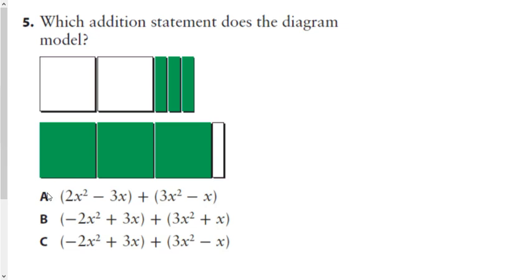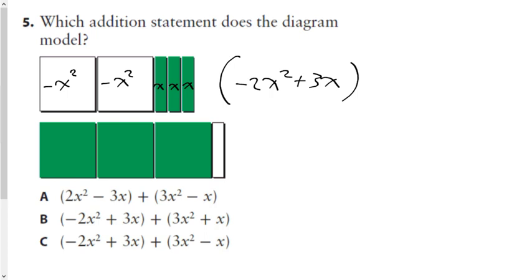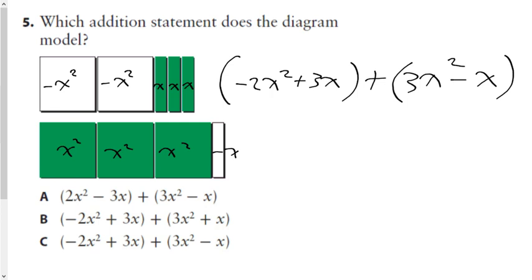Okay ladies and gentlemen, these are the answers to section 5.3 in our textbook on adding and subtracting polynomials. We start at question 5, which asks which addition statement does the diagram model. These are negative x-squared tiles and these are x tiles. This expression is negative 2x² plus 3x, and we combine it with 3x-squareds and a negative x, which is minus x. Scanning for which answer that is — the answer is C.